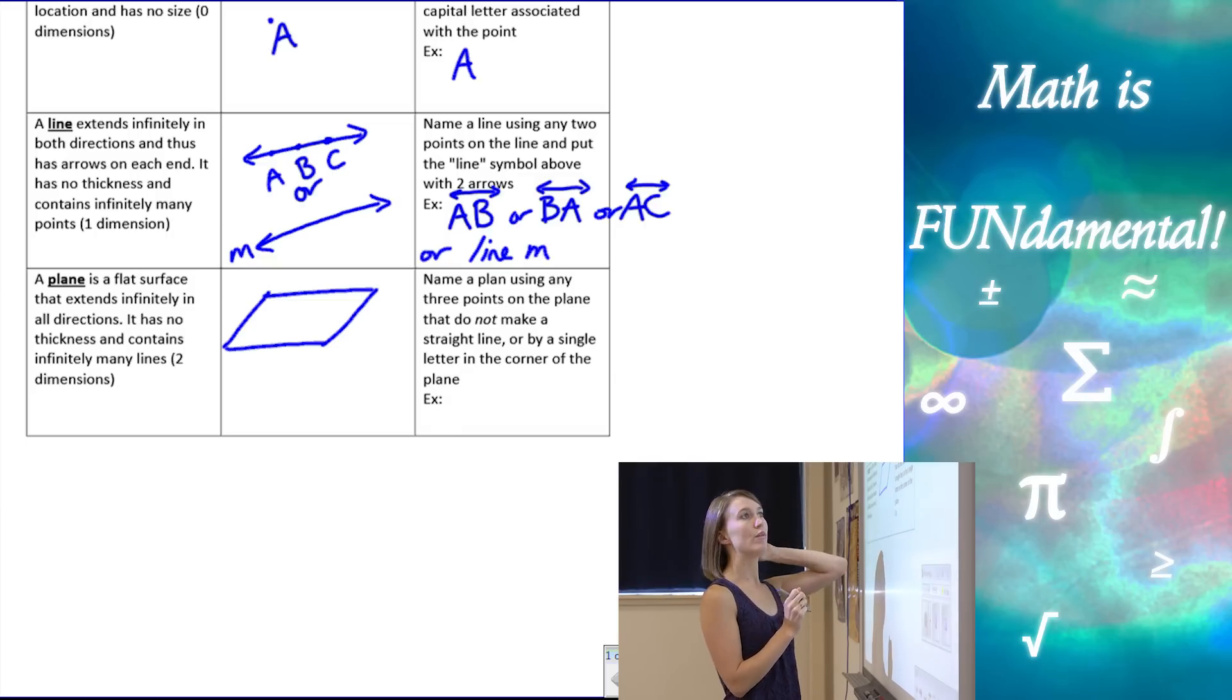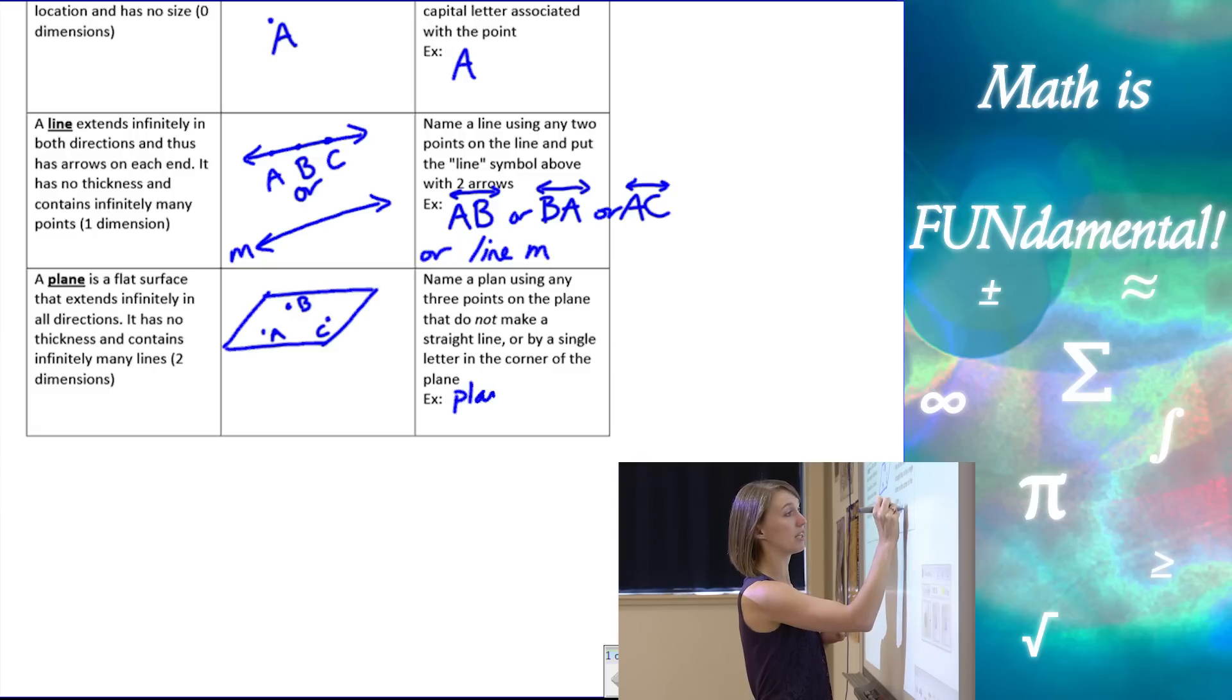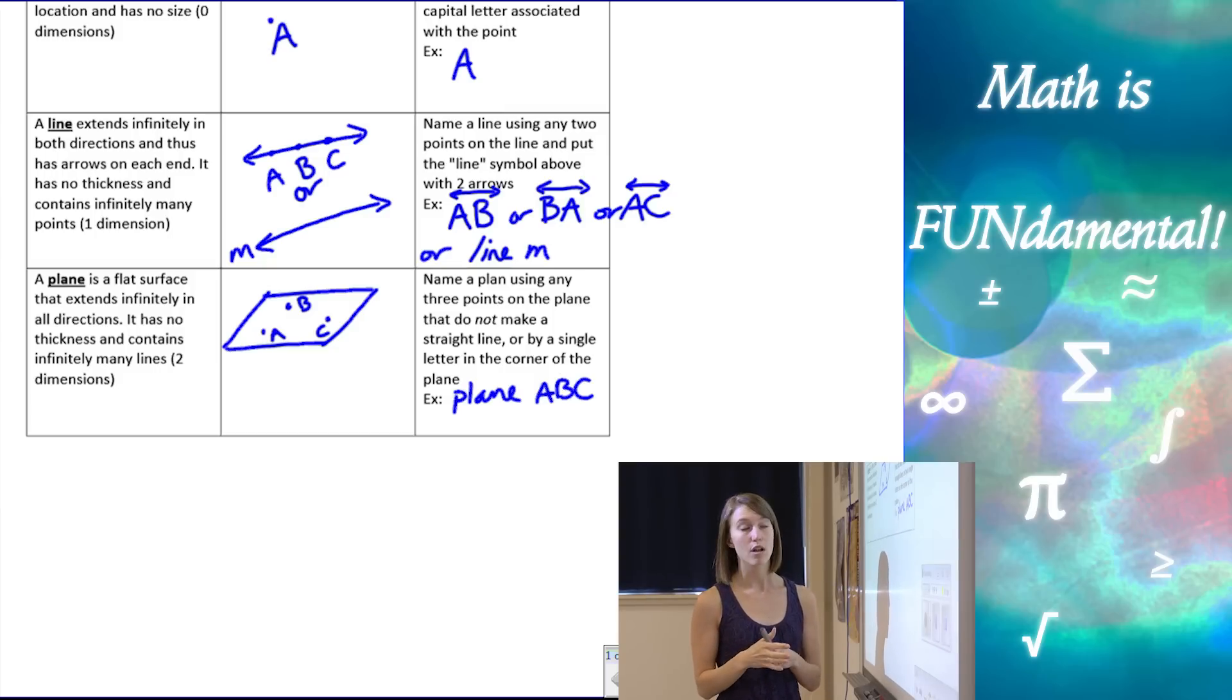And naming a plane, we can use any three points in the plane. For example, if we have these three points in the plane, but you need to make sure that when we do that, so here I'd have plane A, B, C, or you could have B, C, A, it doesn't matter the order, but you need to make sure those points do not make a straight line. You want to pick three points in the plane that don't all line up.